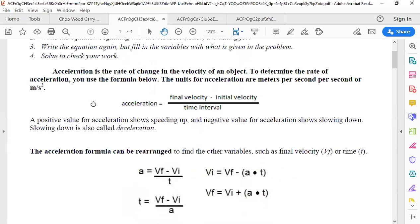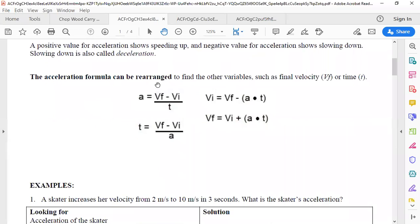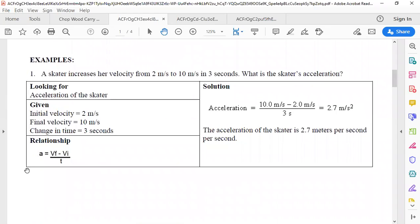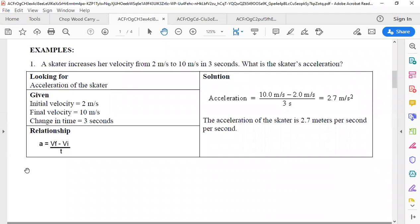And it shows us the rearranged formulas for solving for A, T, Vi, and Vf. It talks about what those are and then it gives us examples of each type of problem. So this paper is a lot like what a physics textbook might show you. It talks about all the different relationships and it gives us examples of each.